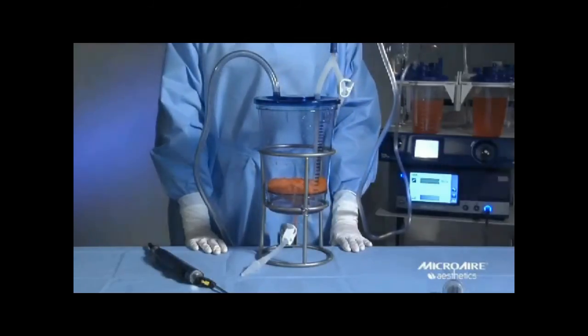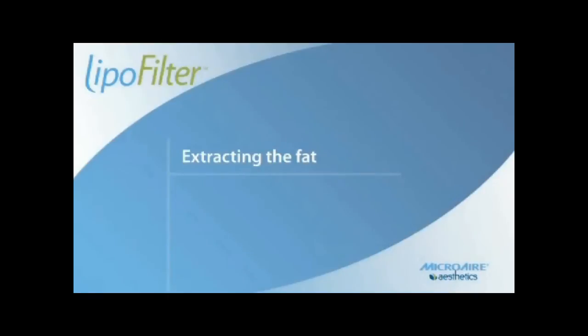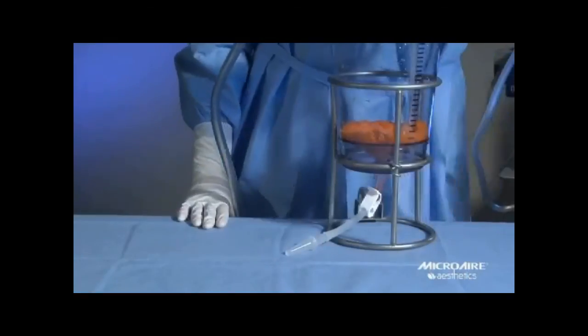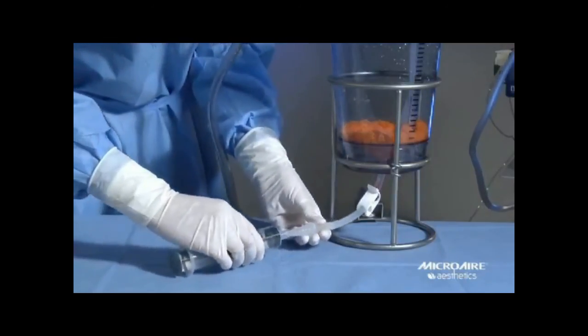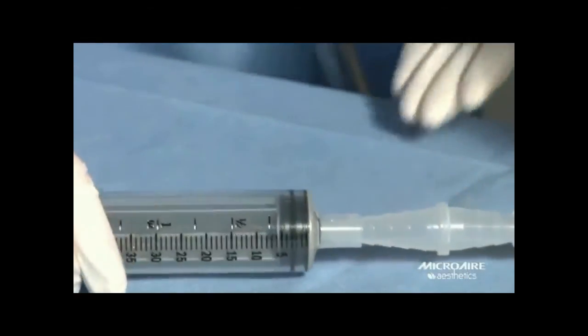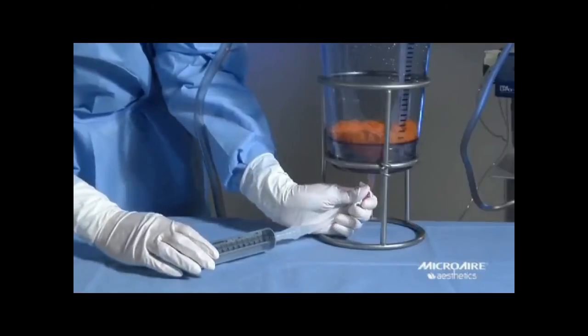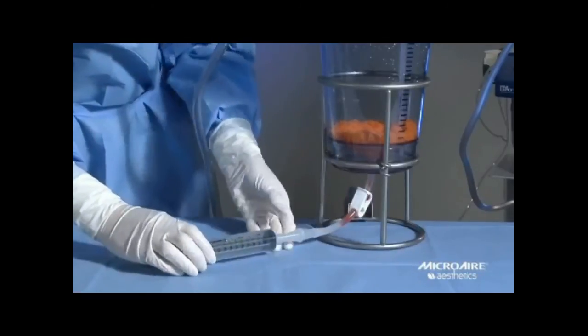To extract the fat, connect the tomy syringe to the fat evacuation tube. Push the syringe on until you feel it click. Open the lower pinch clamp and draw out the residual fluid that remains in the stem and discard.